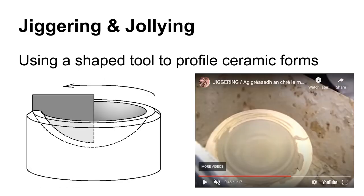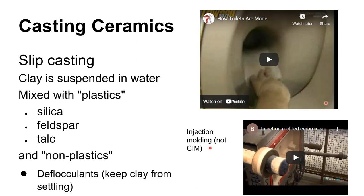Jiggering and jollying are traditional ceramic manufacturing processes. Both use a card-shaped tool with the profile of the revolved shape desired — good for plates and bowl shapes. Jiggering applies the tool to the outside, such as the bottom of a plate, while jollying applies it to the inside of a concave shape.